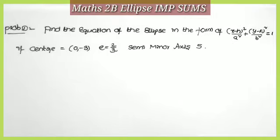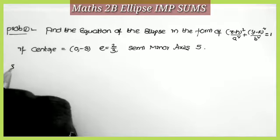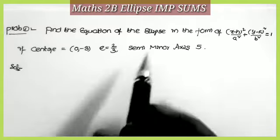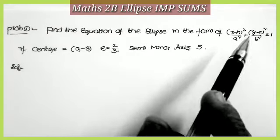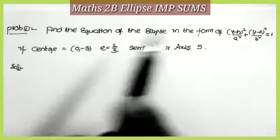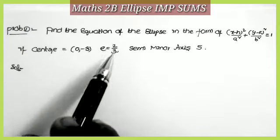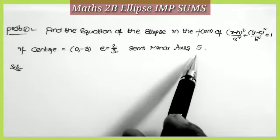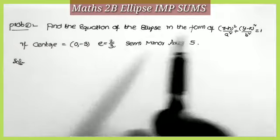Good morning students, welcome back to Shanatha Math channel. This is the continuation video of the Math 2B ellipse topic — most time before math questions, video number 4. Let us start the first problem: find the equation of the ellipse in the form (x−h)²/a² + (y−k)²/b² = 1, if center = (0, −3), eccentricity e = 2/3, and semi-minor axis = 5.